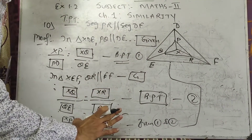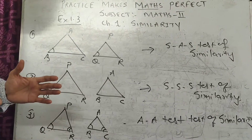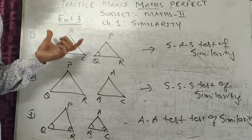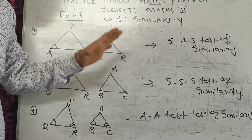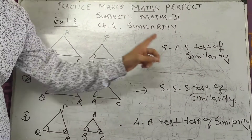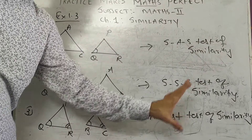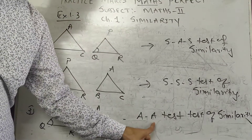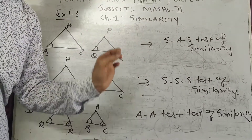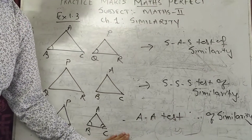This sum is over — a very easy sum where you just fill in the activity boxes. Now we will come to exercise 1.3. Exercise 1.3 is based on tests of similarity. In tests of similarity you have three tests: side-angle-side, side-side-side, and angle-angle test of similarity.